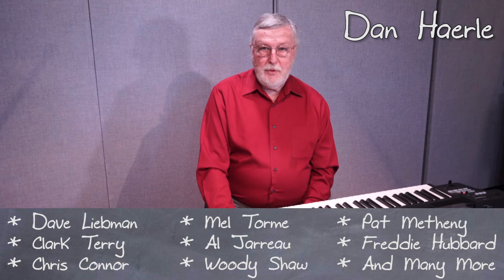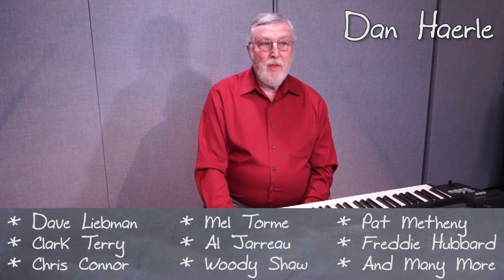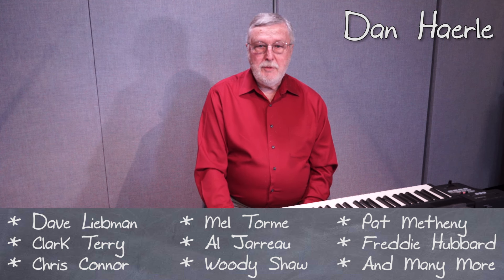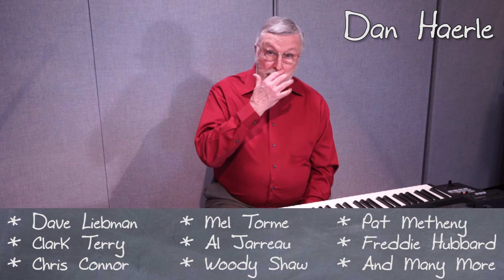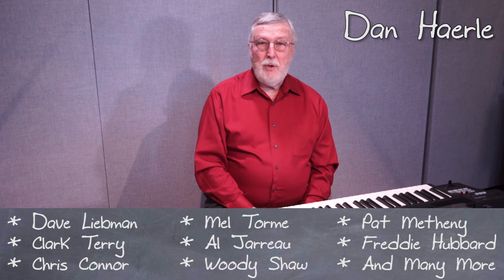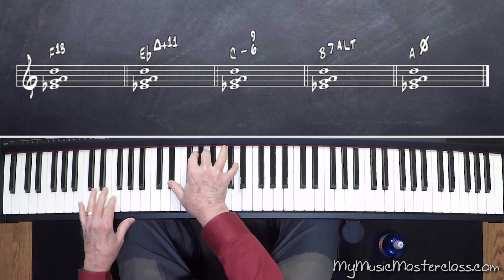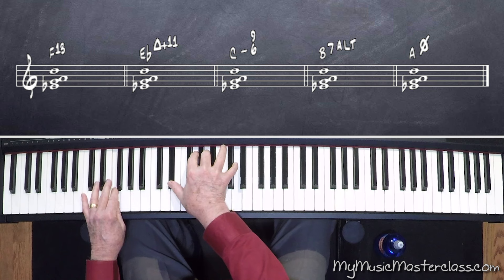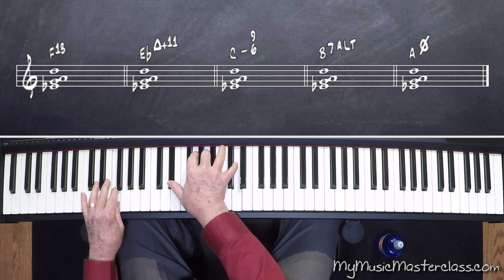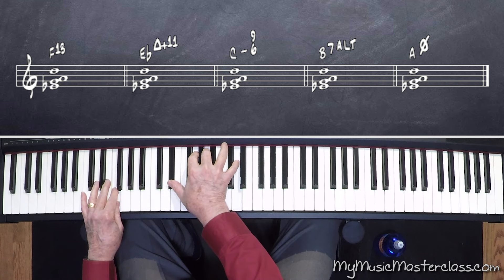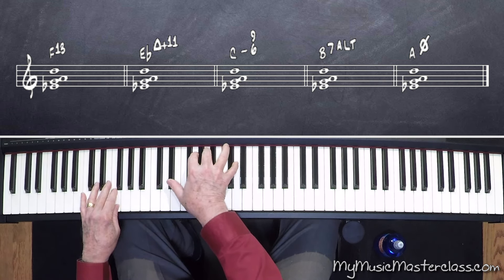I'm going to talk about magic voicings, which I call magic voicings because the same shape kind of magically transforms itself into several different chords. I can put an F under it and it's an F13 chord. It contains the notes: the b7, the 9, the 3rd, and the 6th or 13th — an unaltered dominant 13.